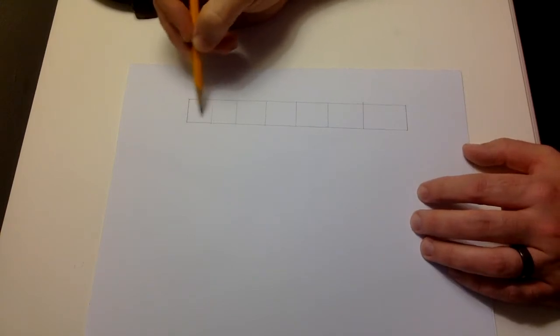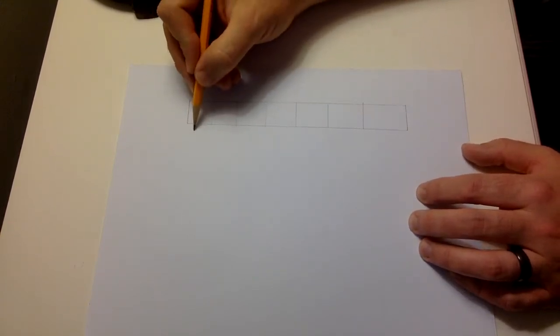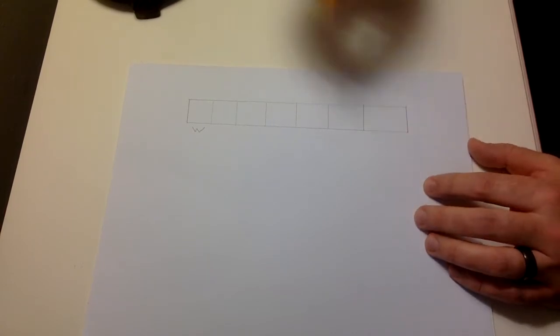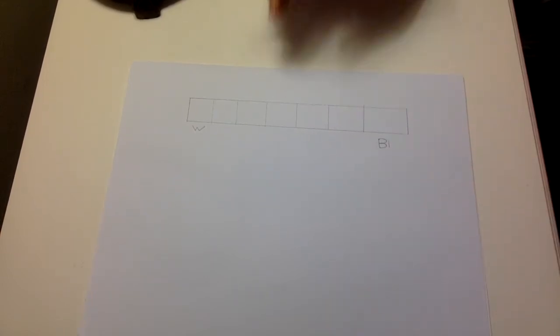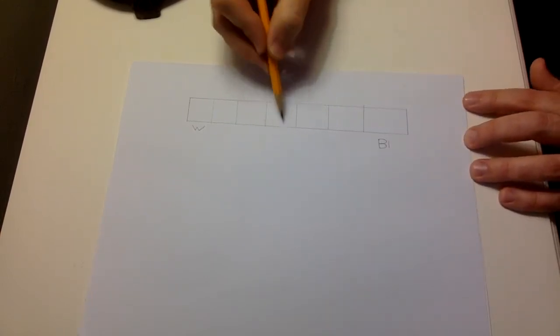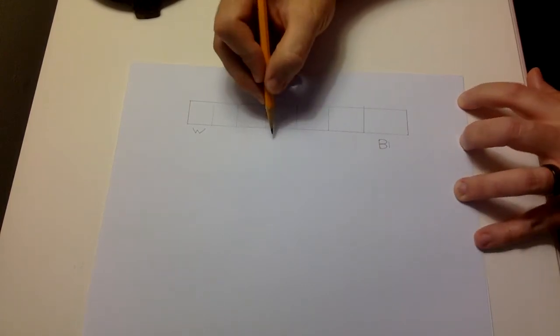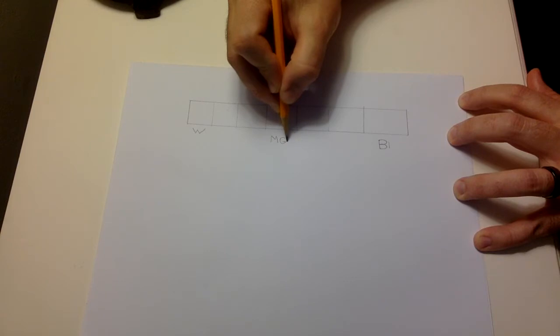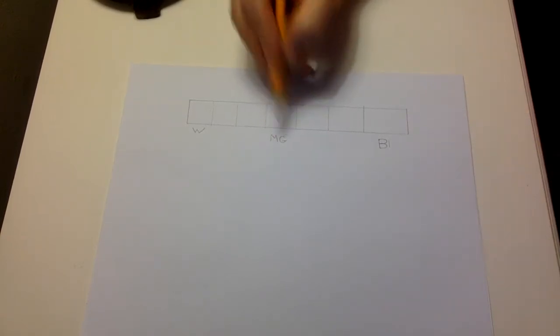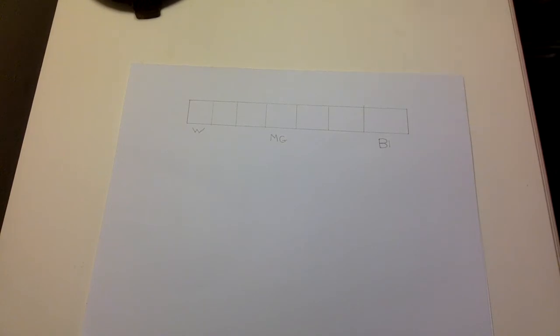And right over here on this left side, I'm going to put a W, and that's going to stand for white. And over here, I'm going to put capital BL and that's going to stand for black. And then under here, the very middle one, I'm going to call that MG, and that stands for middle gray. So we want this gray over here to be the most middle of middle grays.